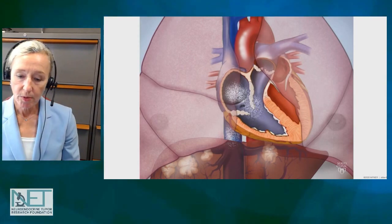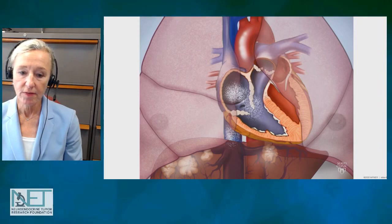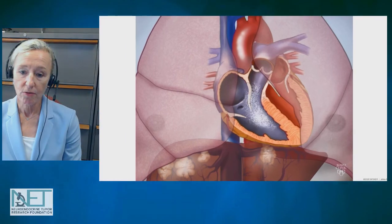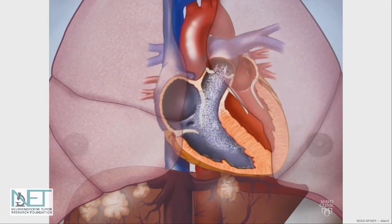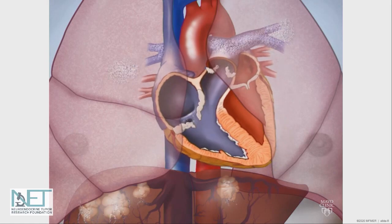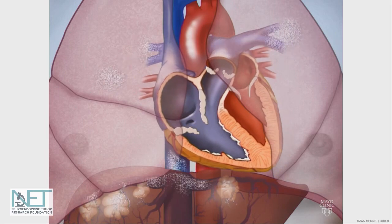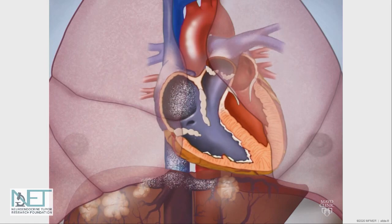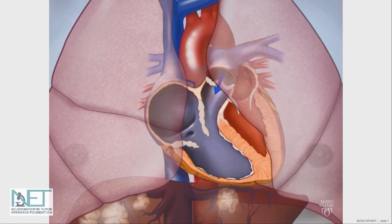So remember that the primary tumors are usually in the small bowel and metastasized to the liver. We can see several metastases in the liver, which is located below the diaphragm here. Serotonin-rich blood enters the bloodstream and drains directly into the right side of the heart. It's believed the serotonin causes thickening and abnormal function of the valves on the right side of the heart, and you can see those valves are thickened now, the right-sided heart valves.